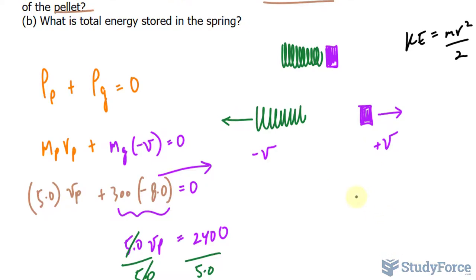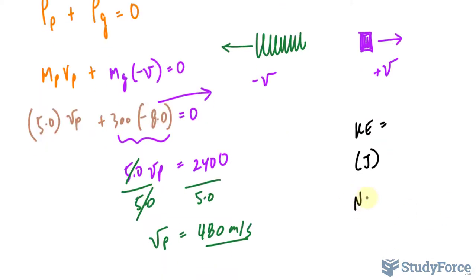So we'll find the kinetic energy of this and the kinetic energy of the spring and add them up. Let's begin with the pellet. KE is equal to the mass. And make sure that the mass of the pellet is represented in kilograms because the units for kinetic energy are in joules. And joules is newtons times meters. And newtons is in kilograms times meters per second squared. So you have to have it in kilograms.